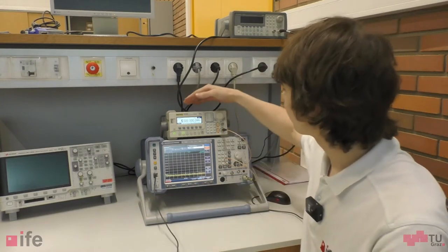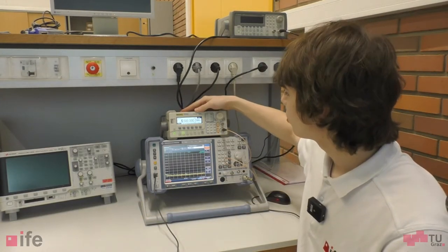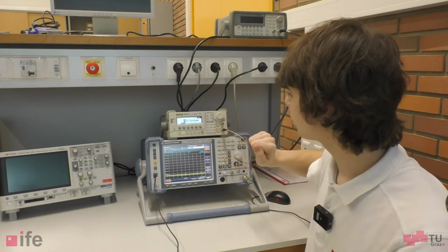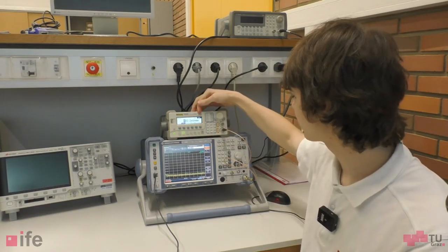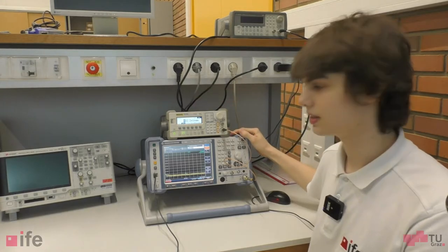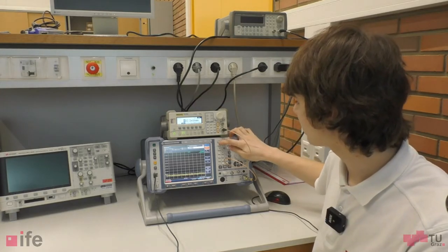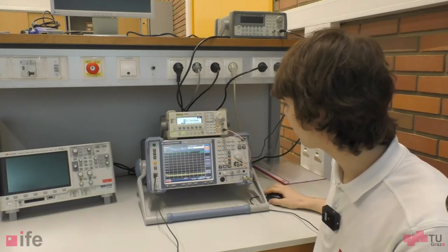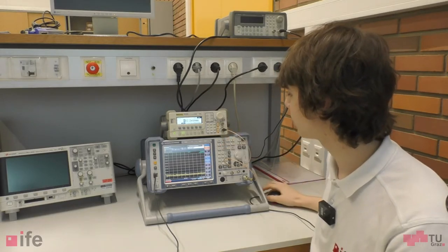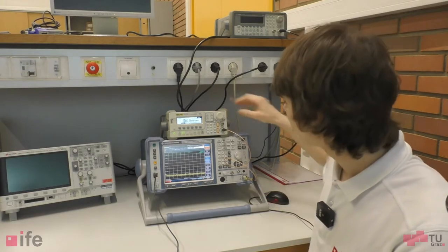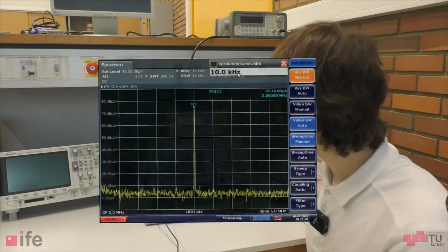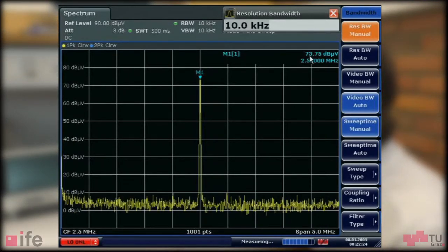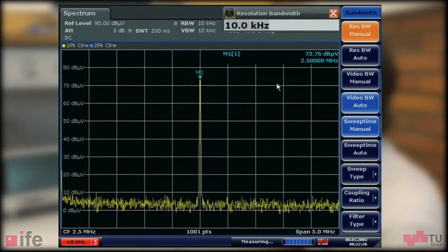In order to do so, I have set the waveform generator to output a square wave at 2.5 MHz with an amplitude of 100 mV RMS. The spectrum analyzer is set to measure at a fixed center frequency of 2.5 MHz with a span of 5 MHz and a resolution bandwidth of 10 kHz. When I turn the output of the waveform generator on, we can see one peak at 2.5 MHz with an amplitude of 74 dB microvolts.